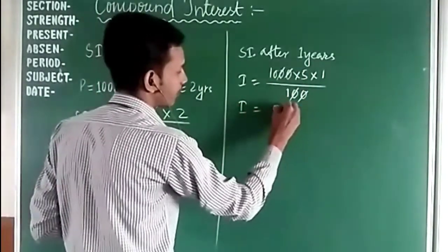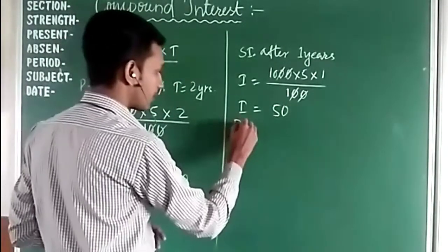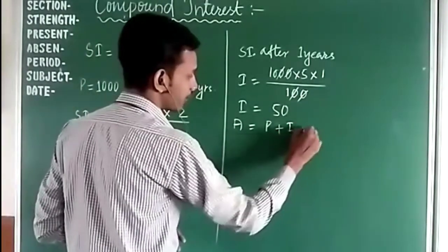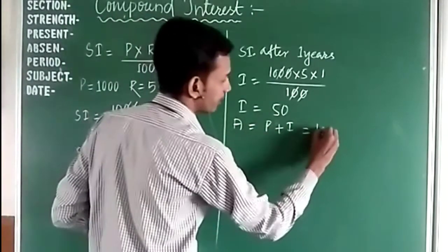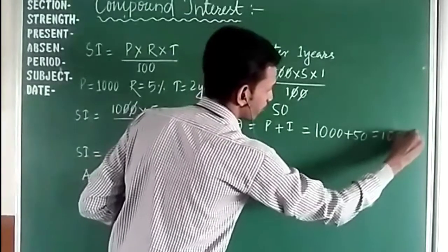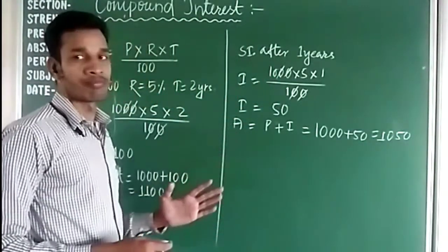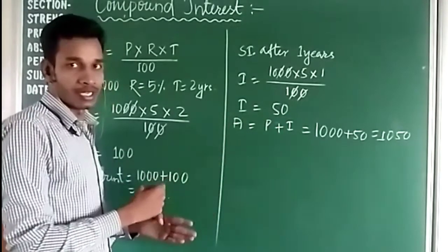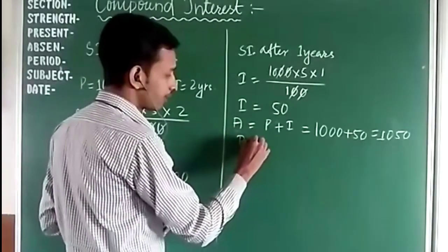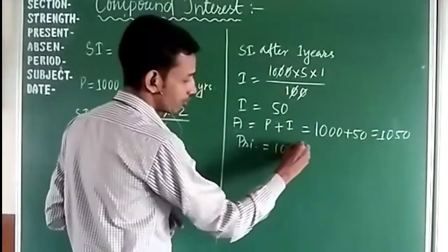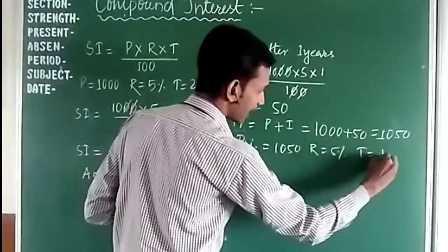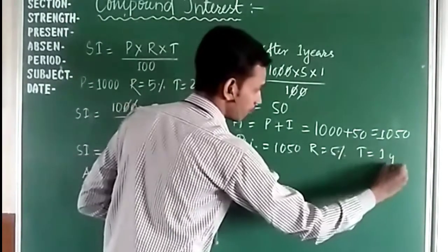The interest after one year is 50 rupees. The amount after one year becomes principal plus interest, which is 1000 plus 50, giving us 1050 rupees. This amount of 1050 now becomes the principal for the second year, with the rate remaining the same at 5% and the time again taken as one year.